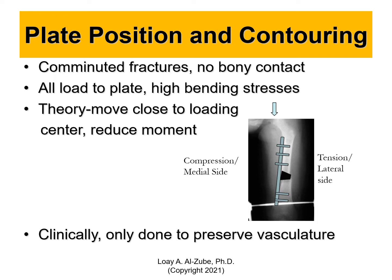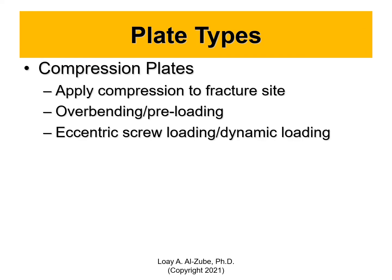That helps preserve vasculature. If you're worried about the blood vessels in one side of the periosteum, you decide to place the plate on the compression side, not on the bending or tensile side of the bone. Compression is bad if you want to preserve the periosteum — that thin layer on the bone — because it's filled with stem cells.